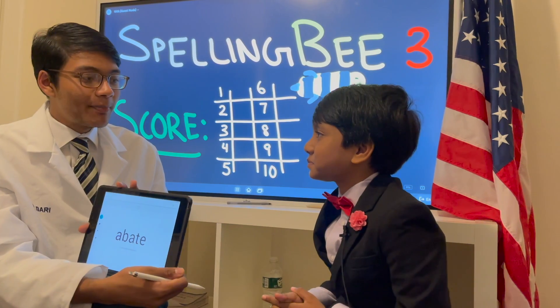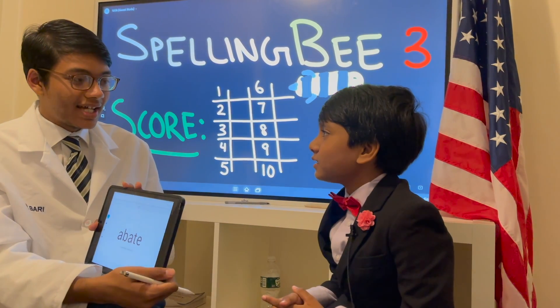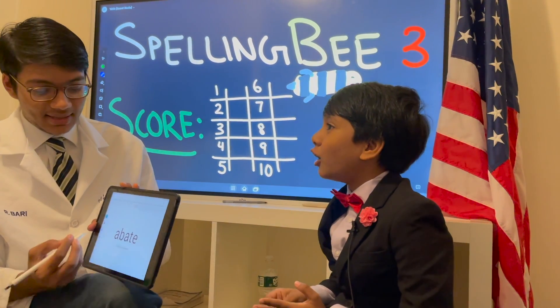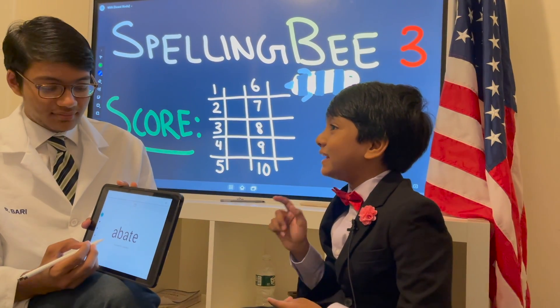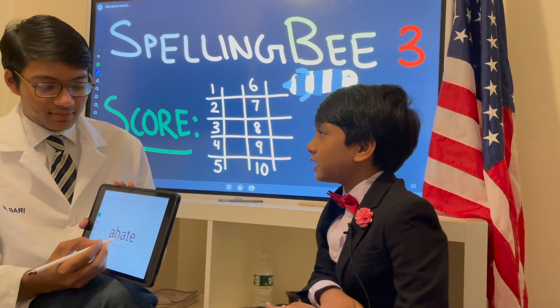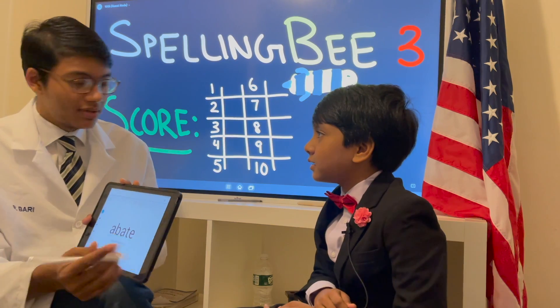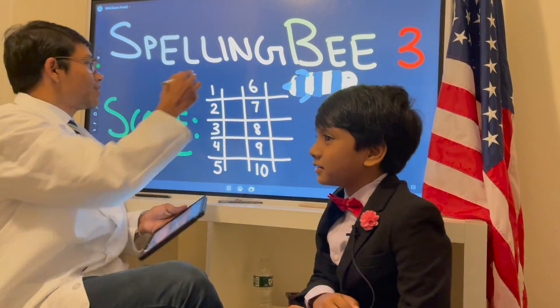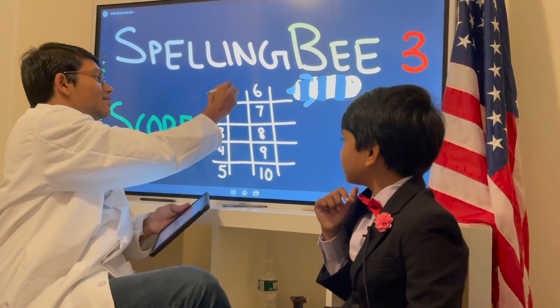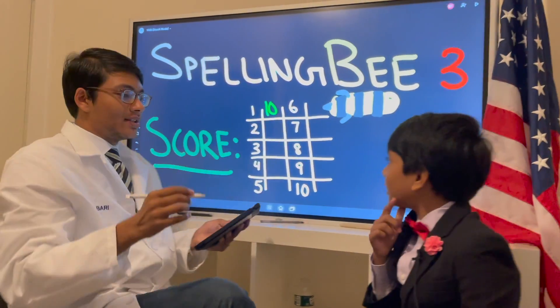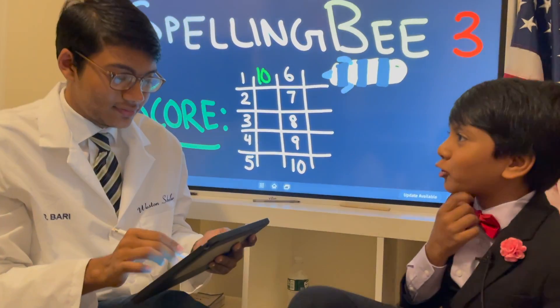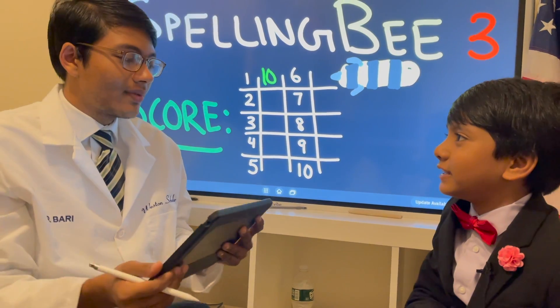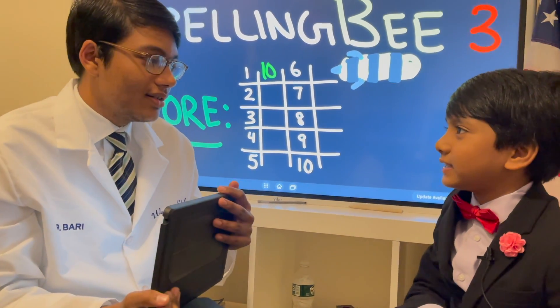The first word is abate. Abate. Oh yeah, A-B-A-T-E. That's right, you're earning points. I learned about that word when I was looking at the early parts of the dictionary.